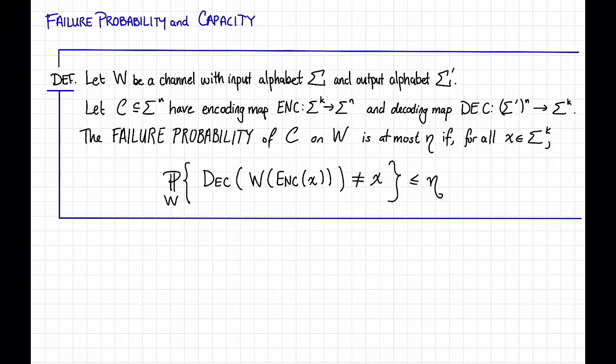When we were talking about adversarial errors, our goal ended up being a combinatorial statement about the best tradeoff between rate and distance. Now, for random channels, we once again want to know what is the best tradeoff between rate and the ability to correct errors on this channel. To define that, we'll use the failure probability — specifically, what's the best rate at which you can communicate across this channel with failure probability going to zero. It turns out that there is such a limit, and it's called the capacity of a channel.